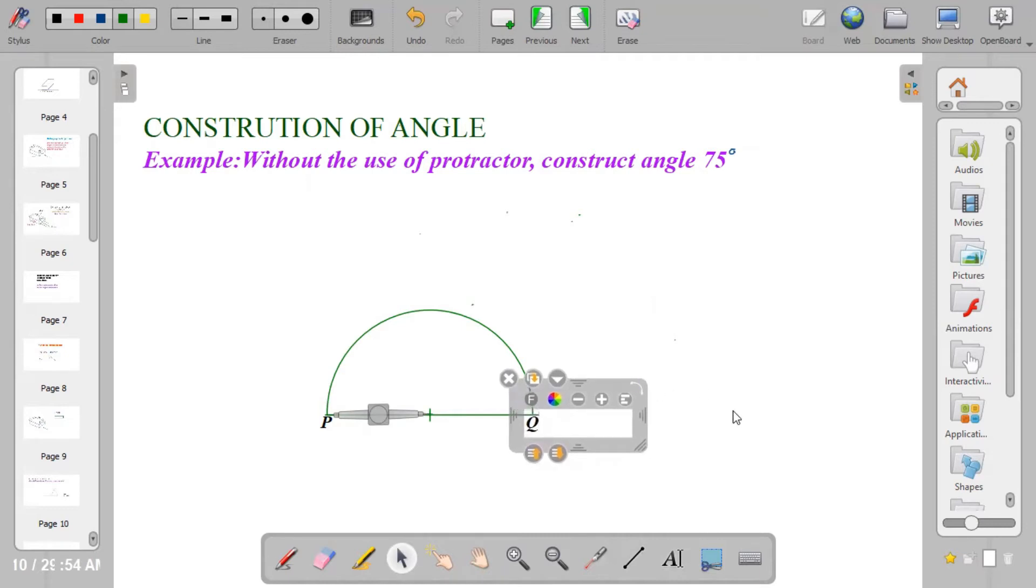Now there are two ways in which you can construct this angle. You can either construct 30 degrees plus 45 degrees that gives you 75. You can as well use 60 degrees plus 15 degrees, you still get the same results. But in today's video I'm going to show you how to construct 75 using 60 plus 15 degrees.